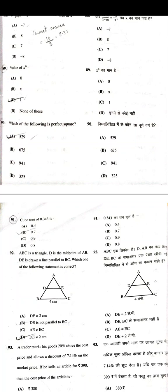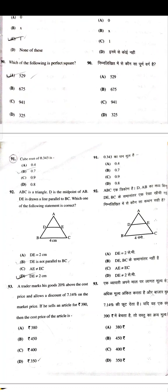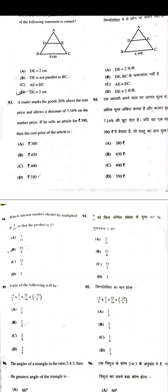Which of the following is a perfect square — 529. Cube root of 0.343 is 0.7. In triangle ABC, D is the midpoint of AB and DE is drawn parallel to BC — the correct statement is DE is not equal to 2. Which rational number should be multiplied by 8/21 so that the product is 1 — the answer is 21/8.